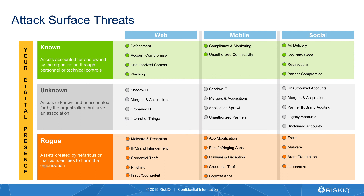Another way of thinking about this: there are a number of different threats that can impact your attack surface. We have our digital channels up top — web, mobile, and social. For all intents and purposes, web in this case is comprised of internet of things, infrastructure, cloud, web apps, et cetera. On the left-hand side we have your digital presence — all of your assets that exist online. We've broken up the types of threats that could take place against your digital presence into three different categories: known, unknown, and rogue.